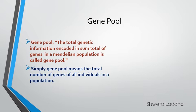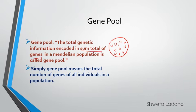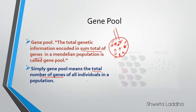Now let us understand the concept of gene pool. The total genetic information encoded in the sum total of genes in a Mendelian population is called the gene pool. Each organism in the Mendelian population has its own set of genes. The sum total of all the genes — of individual A, B, C, D, E, F, G, H, I, J, K — the total number of genes of all individuals in a population is termed as the gene pool.